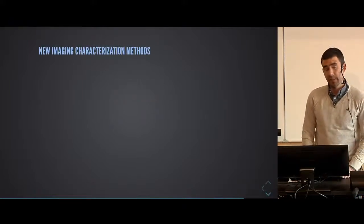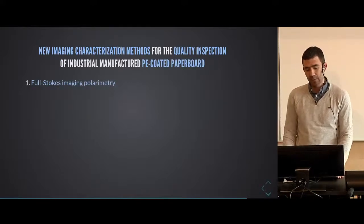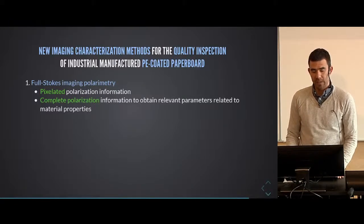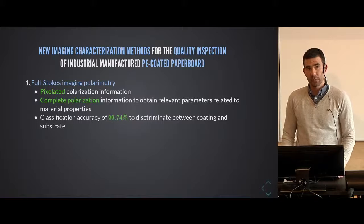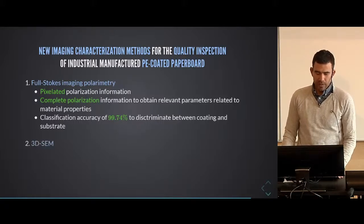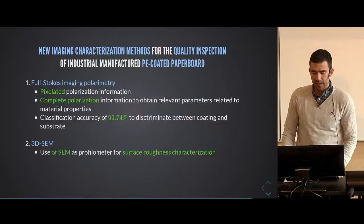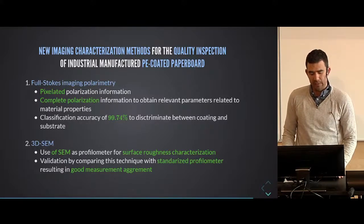To conclude, we have proposed new imaging characterization methods for the quality inspection of industrial manufactured polyethylene coated paperboard. Full Stokes imaging polarimetry presents pixelated information, and if complete polarization information from materials can be obtained, relevant parameters can be used to discriminate between two materials with high accuracy. A scanning electron microscope used as a profilometry technique via stereophotogrammetry has been evaluated for the surface characterization of PE coating and validated against a standard profilometry technique, finding good agreement.